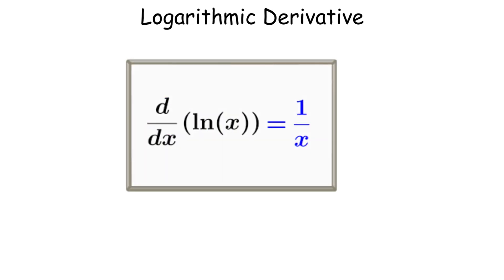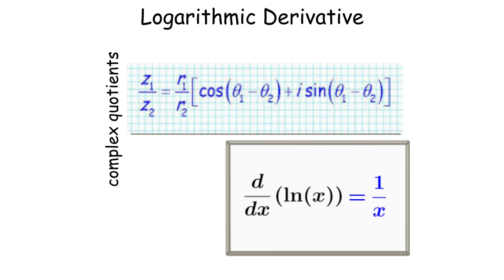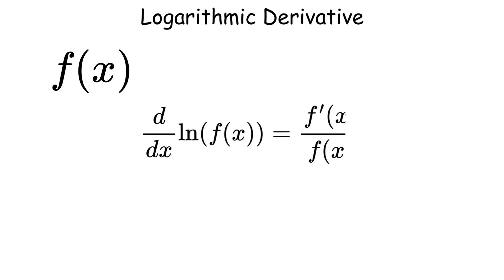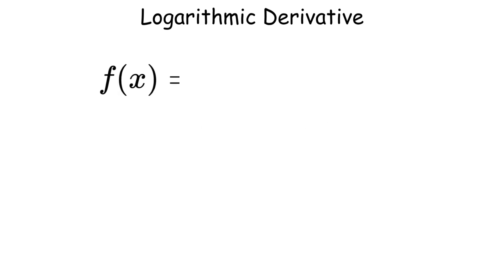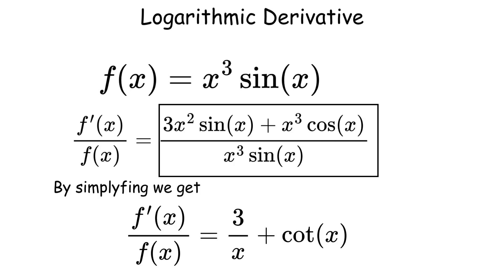The logarithmic derivative simplifies differentiation of complex products or quotients by using the derivative of a logarithm. For a function f of x, it is d over dx of log of f of x equals f prime of x over f of x. For example, for f of x equals x cubed times sine of x, the logarithmic derivative simplifies to 3 over x plus cotangent of x. This technique is valuable in solving differential equations and economic models.